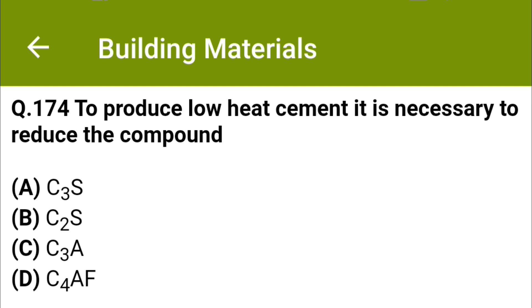To produce low heat cement, it is necessary to reduce the compound: option A C3S, option B C2S, option C C3A, option D C4AF. The correct answer is option C: C3A.